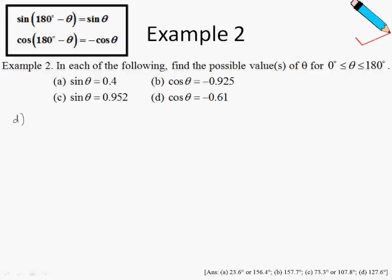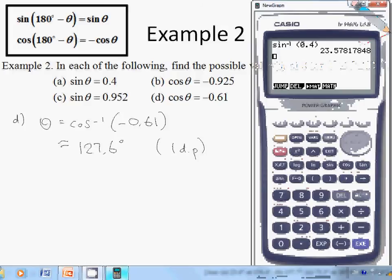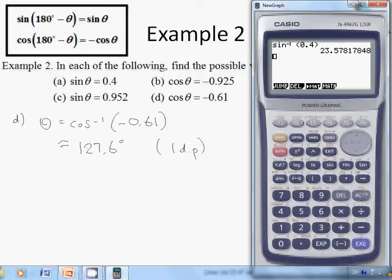For part D, cosine theta equals negative 0.61. To get theta, take cosine inverse of negative 0.61. Press the shift button and then the cosine button to get cosine inverse, enter negative 0.61, close brackets and press equals. Rounding to one decimal place gives 127.6 degrees.